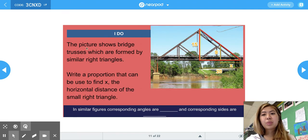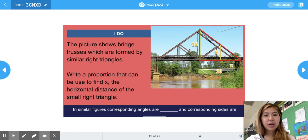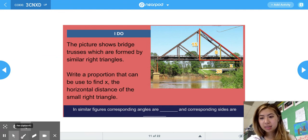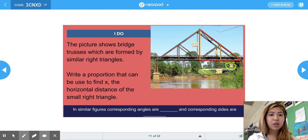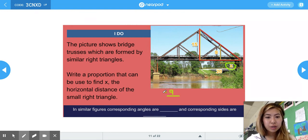For this problem, it says the picture shows bridge trusses which are formed by similar right triangles as you can see. So we have the similar figure embedded inside the other figure. So this is a smaller figure inside the bigger figure. Write a proportion that can be used to find x, which is this right here, the horizontal distance of the small right triangle. So there's multiple ways that we can approach this, but I'm going to approach it the same way that we approached the last few problems.